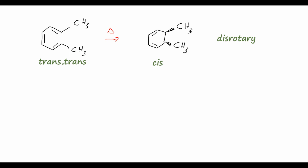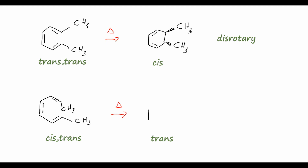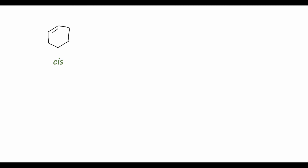If we have the cis-trans isomer of the substituted hexatriene and expose it to the same conditions, it undergoes the same disrotary process, giving the trans substitution on the cyclohexadiene product. One more example: if we start with the cyclohexadiene where both methyl groups are arranged cis and react this photochemically to open the ring, this follows a conrotary process — both methyl groups rotating in the same direction — giving the hexatriene product with the methyl groups arranged in the cis-trans isomer.